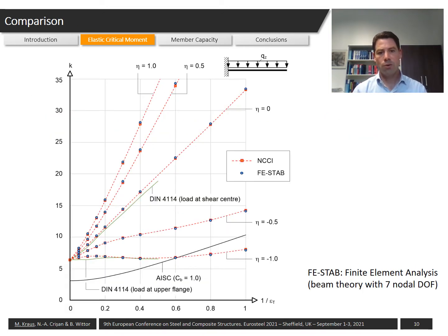To see how good the different k factors approximate the elastic critical moment, the solutions of the previous slides are compared to numerical solutions on this slide. The numerical solutions are gained by finite element analysis with beam elements including 7 degrees of freedom which are able to capture warping torsion and the effect of lateral torsional buckling.